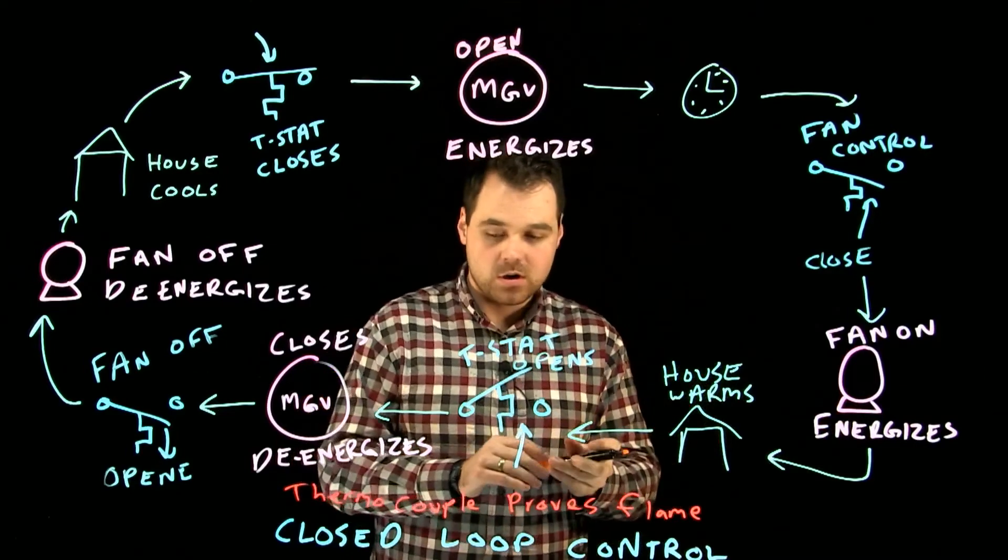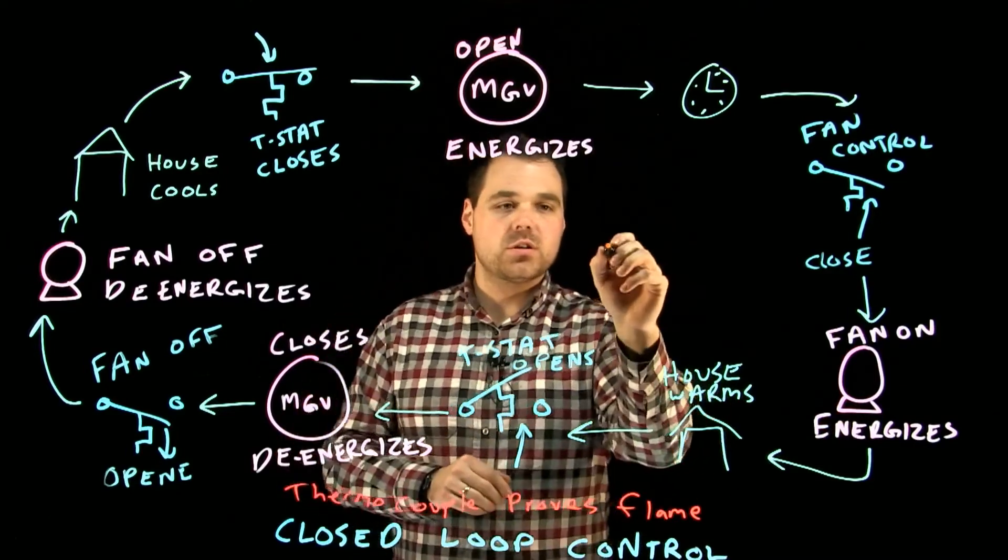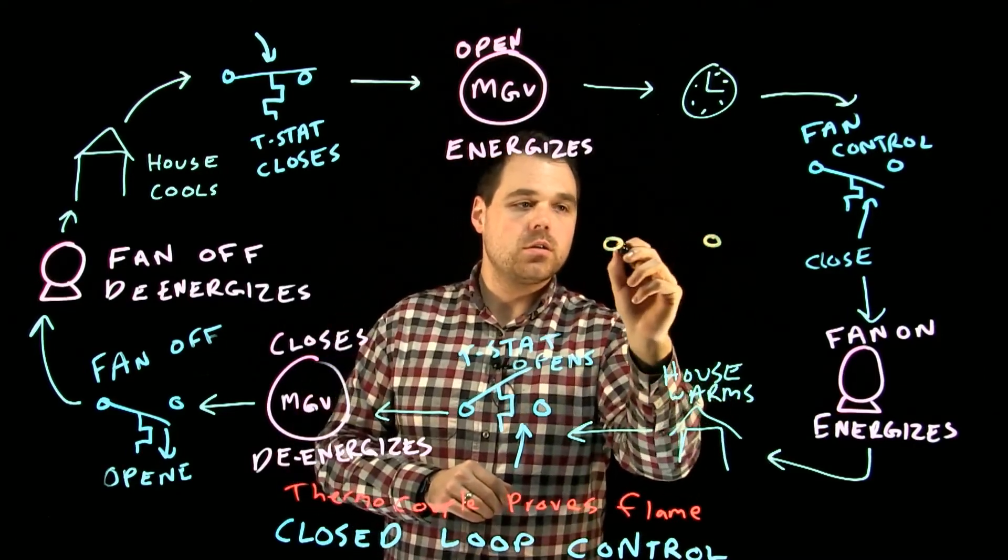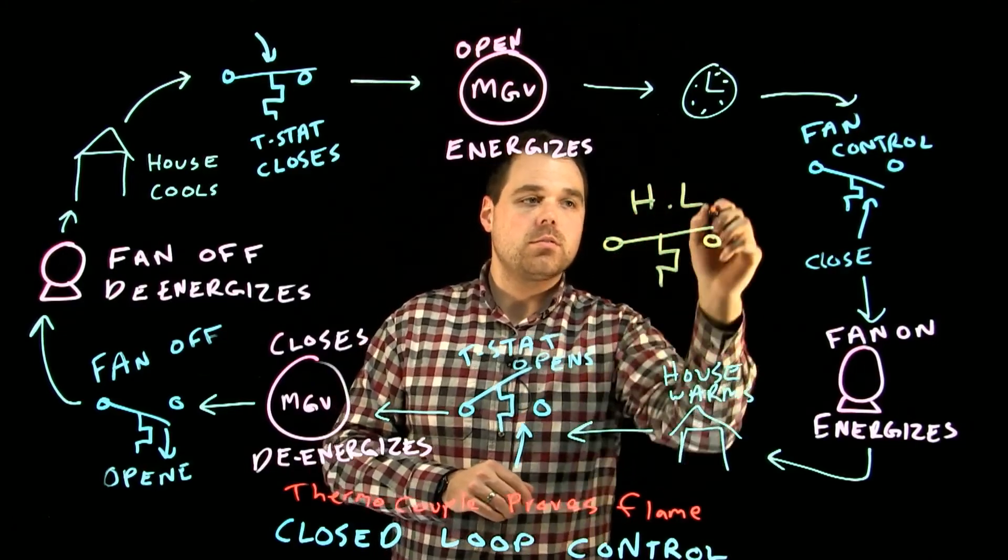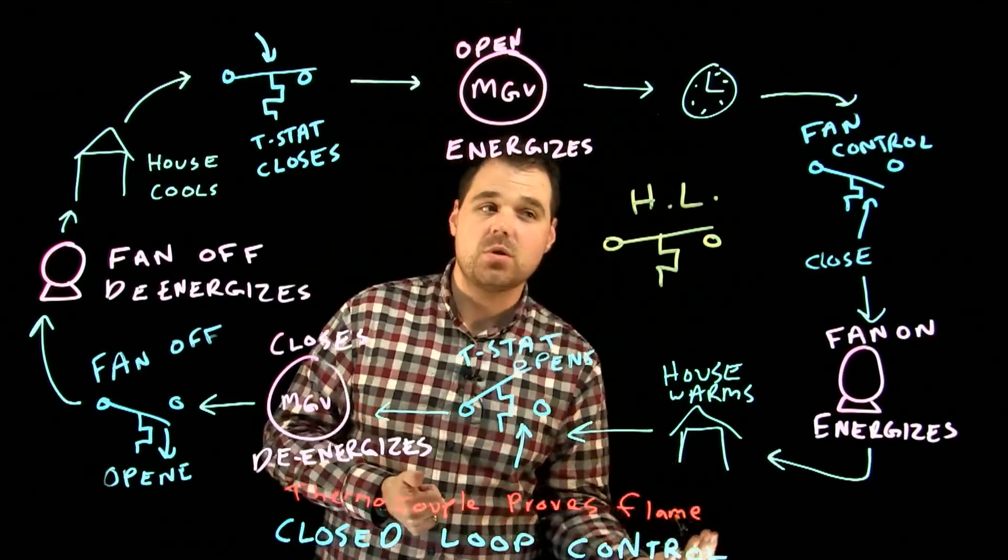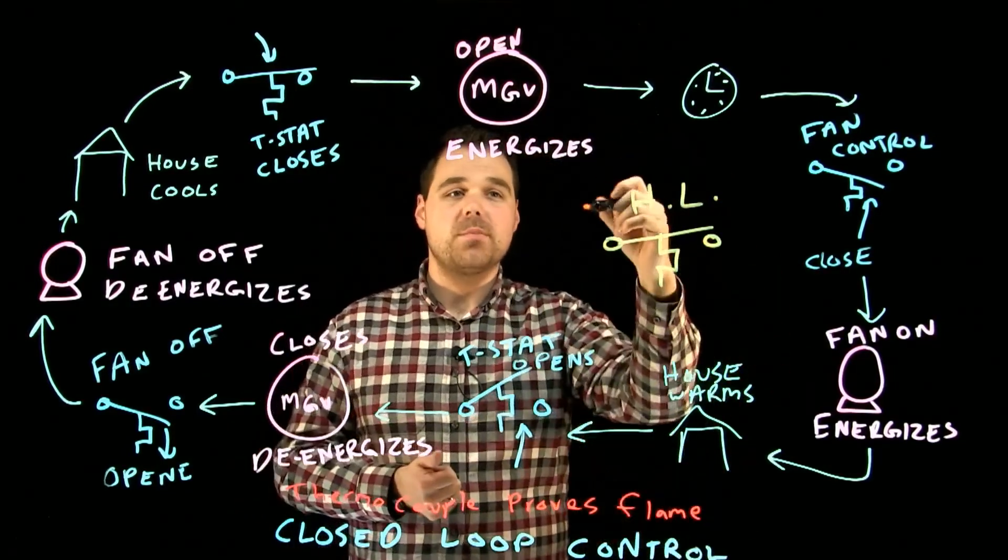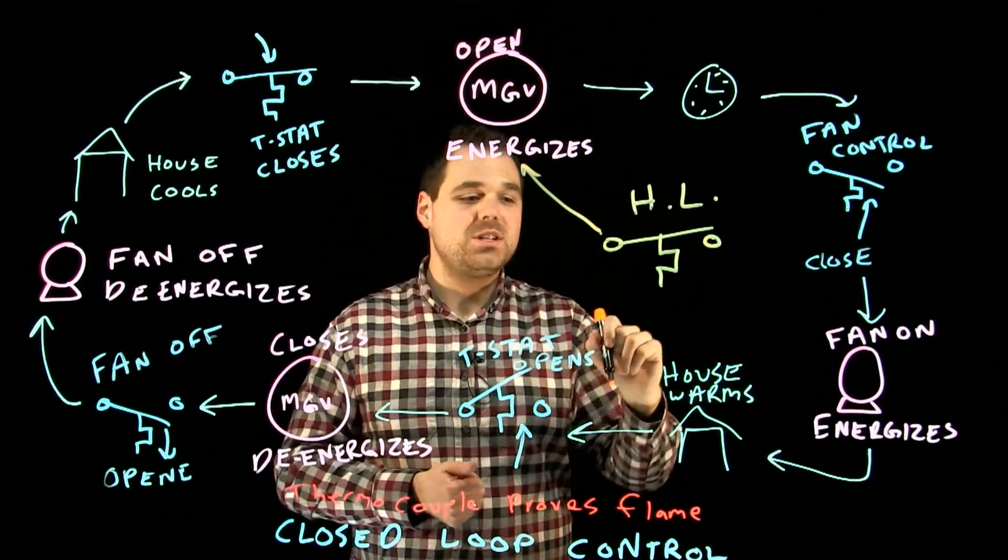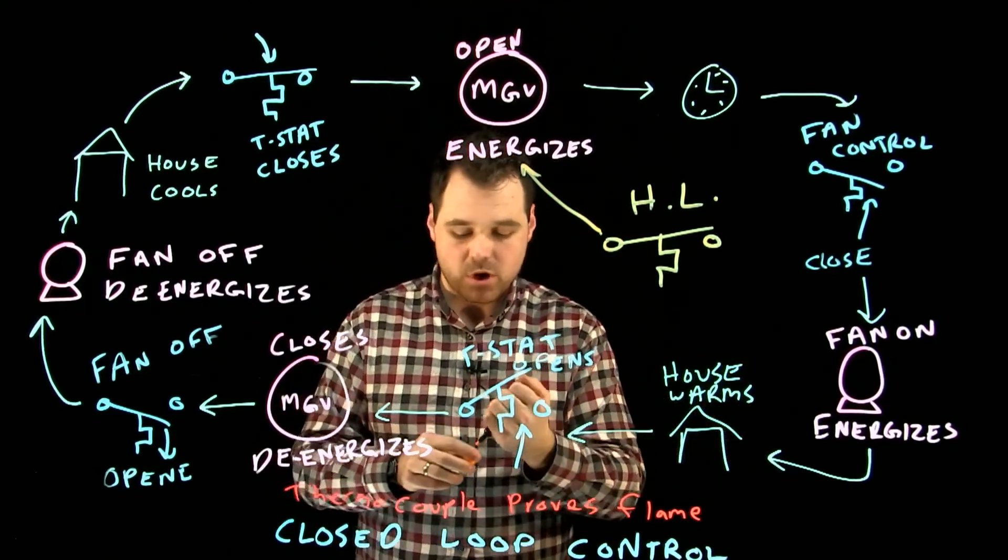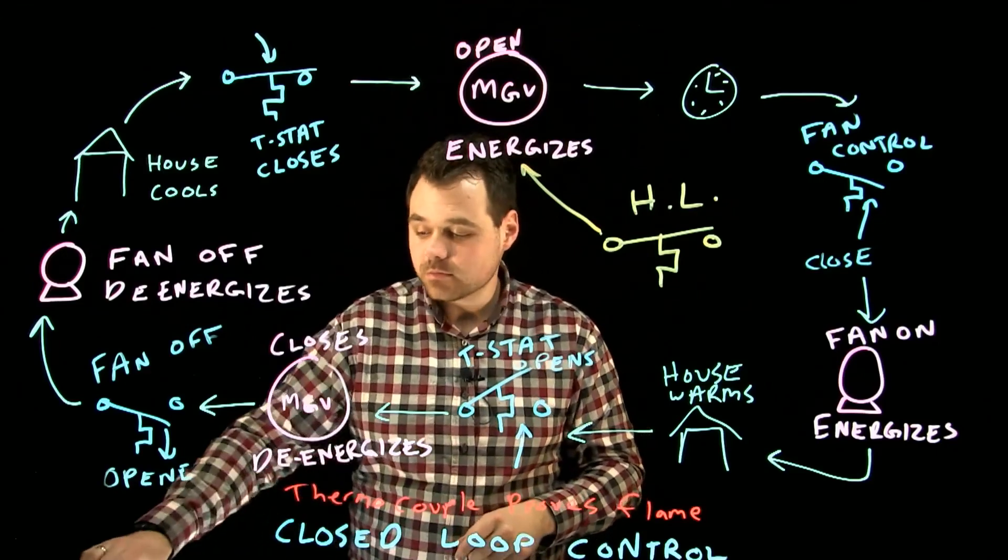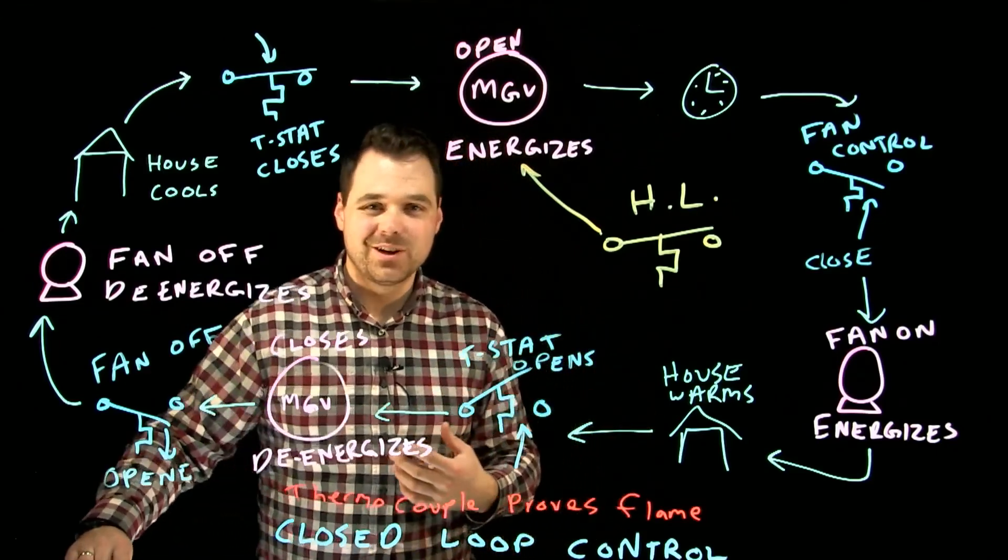The last thing to keep in mind is that all along the process, we have our high limit switch. The purpose of that high limit switch: if it does get too hot in the plenum, it's going to open up and de-energize that main gas valve, but allow that fan to keep running. I hope this was helpful. Please watch the rest of the videos.